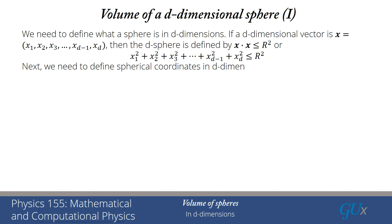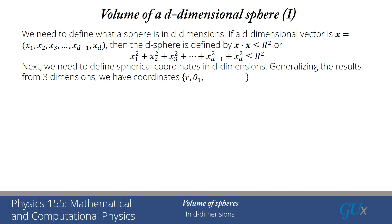Next, we have to go to spherical coordinates in d dimensions, because it's much easier to integrate the volume of the sphere in spherical coordinates. We're going to have a radial coordinate r, and then a whole bunch of angles. The number of angles equals the number of dimensions d minus 1 — just like in 2D there's one angle, in 3D there's two angles, and so forth. So in d dimensions there will be d minus 1 angles.